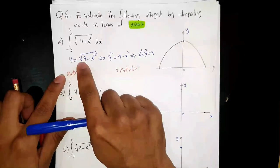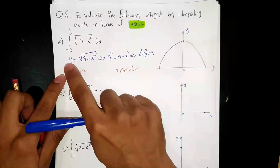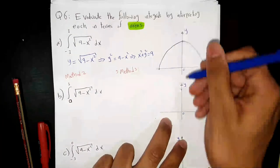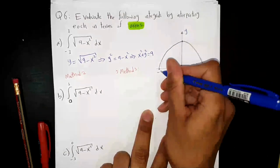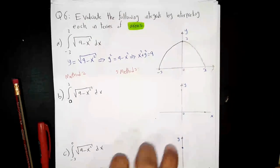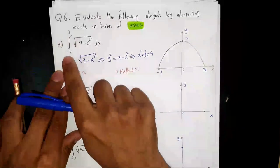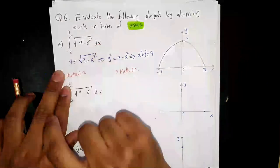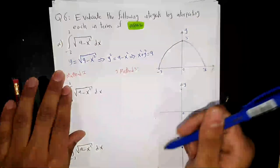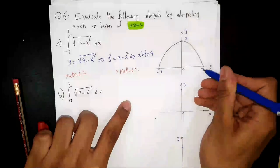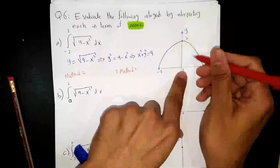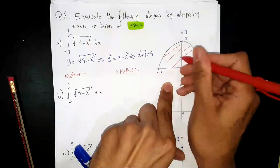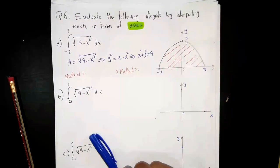We took y equal to plus the root. When you take y equal to the positive root, that means the y values are positive, so you need only the upper part of the circle. This is our 3 and this is -3 and 3. He said integrate from -3 to 3 — these numbers are on the x-axis. The x means integrate from -3 up to 3, so we have only this shaded region. I will call it A.